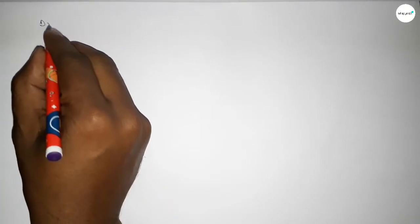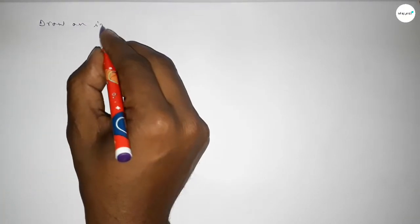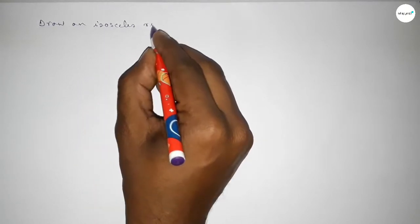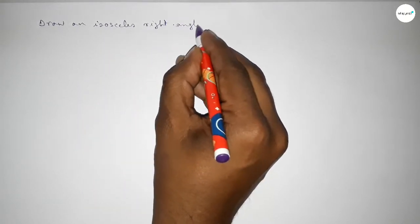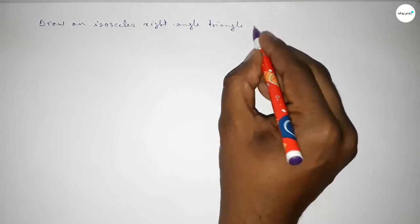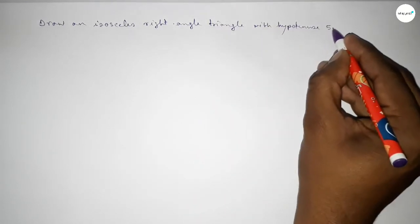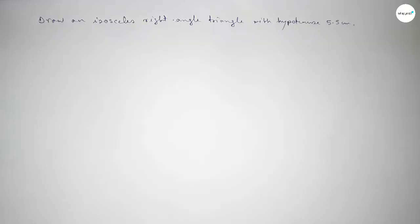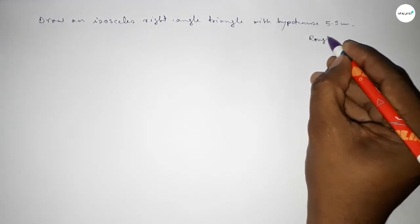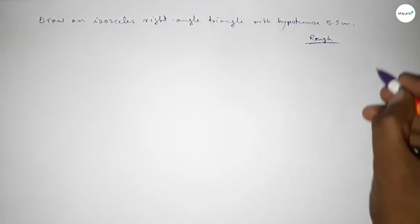Hi everyone, welcome to SI Share Classes. Today in this video we have to draw an isosceles right angle triangle with given hypotenuse 5.5 centimeter. So let's start the video. First of all, we'll discuss the calculation.